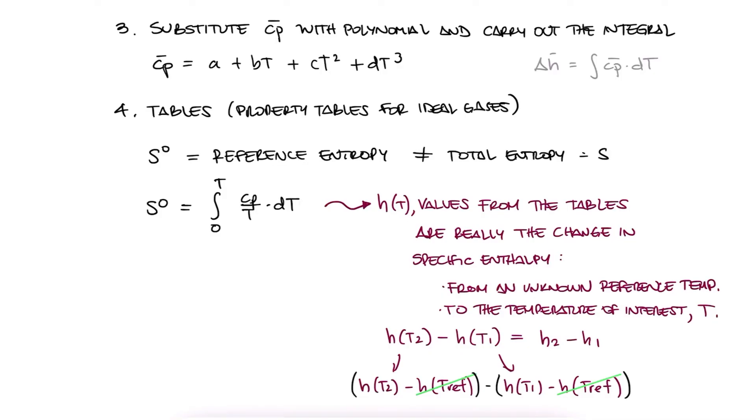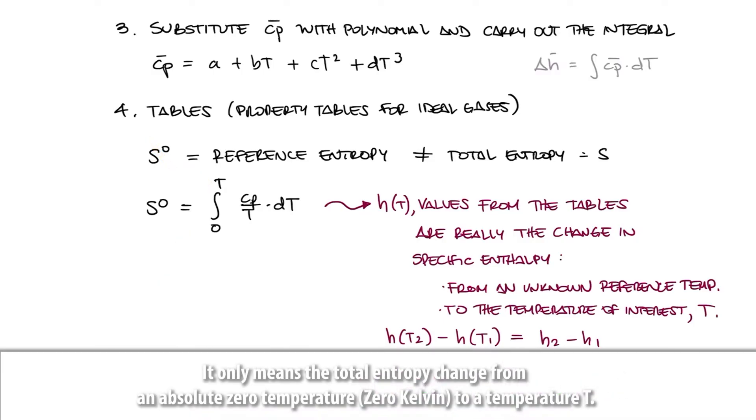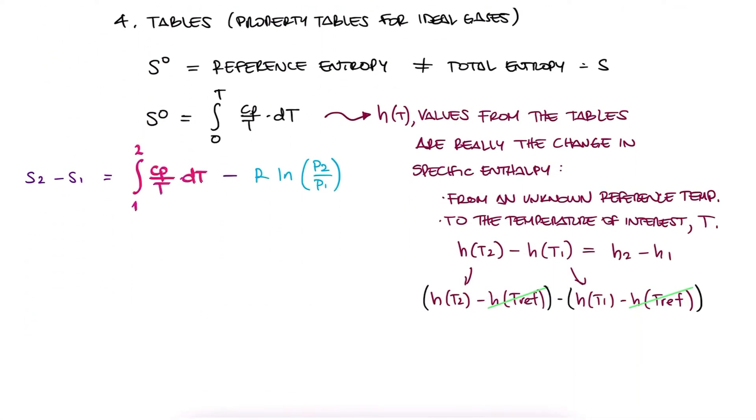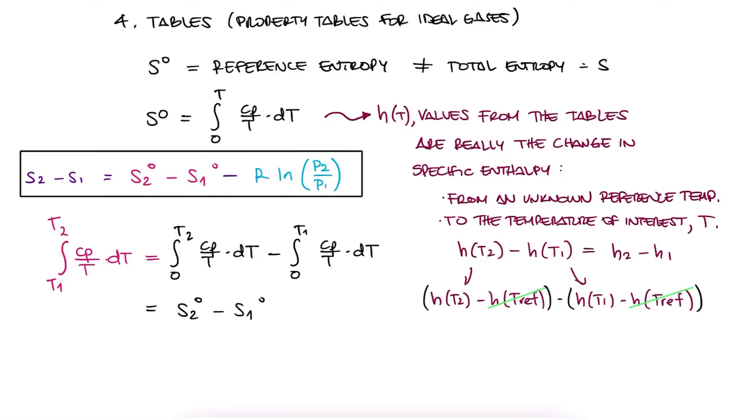The reference entropy goes from 0 to T. By itself, it doesn't mean much, but since what we're trying to calculate is the integral between T1 and T2, then the difference between reference entropies, which both have 0 at the starting value, result in exactly the integral that we're looking for.